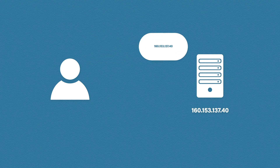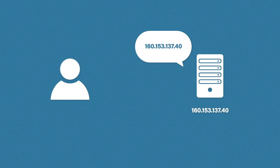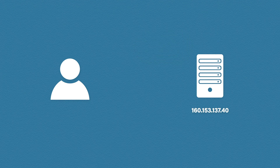But web servers can only understand IP addresses such as 160.153.137.40. Can you imagine trying to browse to websites using the IP address alone? This is why we need something that sits in between us — something that will convert our domain names to IP addresses, almost like a translator. This is where DNS comes in. DNS will take our domain name and then translate, or resolve it, into an IP address.